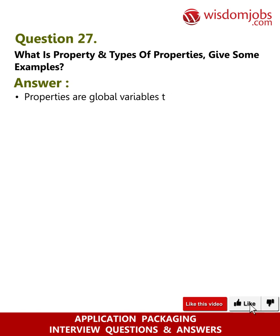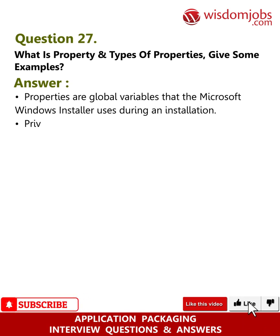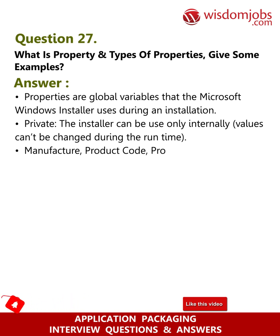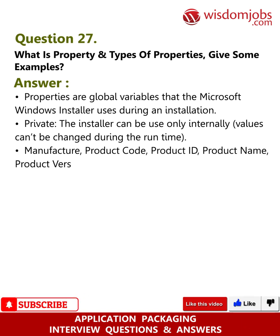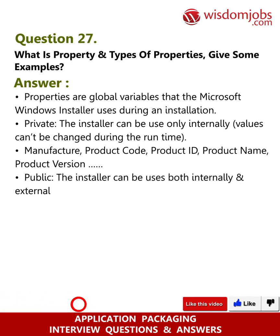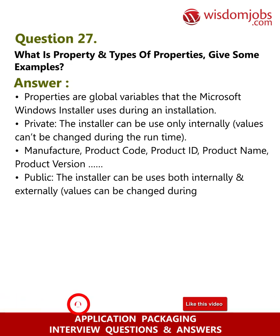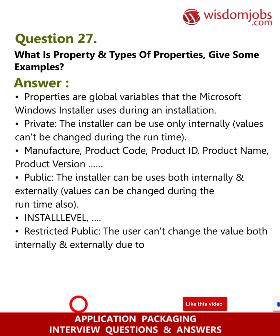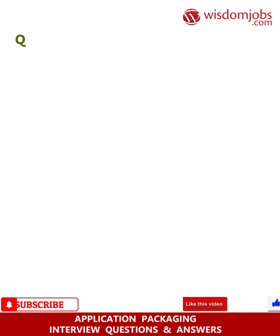Question 27: What are properties and types of properties? Give some examples. Answer: Properties are global variables that Windows Installer uses during an installation. Private: the installer can be used only internally; values cannot be changed during runtime. Examples: ManufactureProductCode, ProductID, ProductName, ProductVersion. Public: can be used both internally and externally; values can be changed during runtime. Example: INSTALLLEVEL. Restricted public: the user cannot change the value internally or externally due to security purposes. Examples: ALLUSERS, REBOOT, REINSTALLMODE.